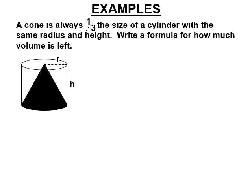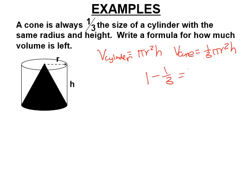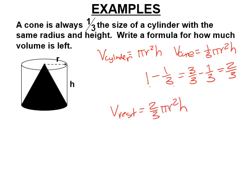A cone is always one third the size of a cylinder with the same radius and height — that's what we just proved. To find the volume left outside the cone but inside the cylinder, subtract the two: cylinder is pi r squared h, cone is one third pi r squared h. One minus one third equals two thirds, so the remaining volume is two thirds pi r squared h.